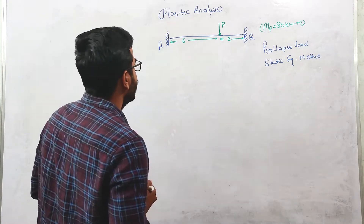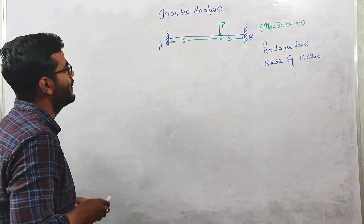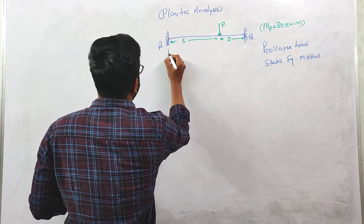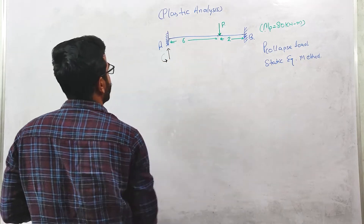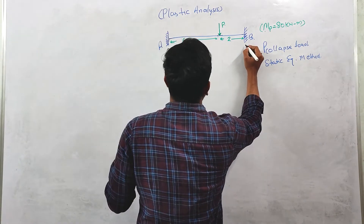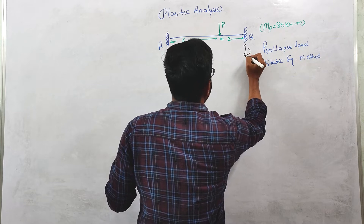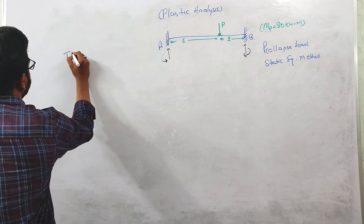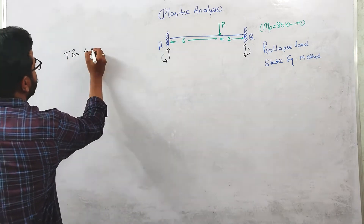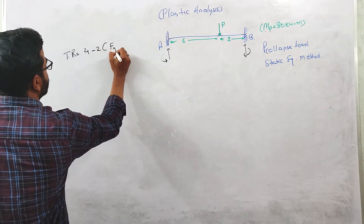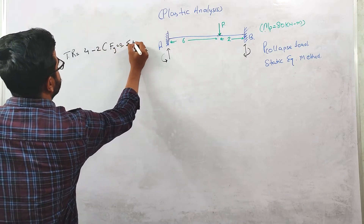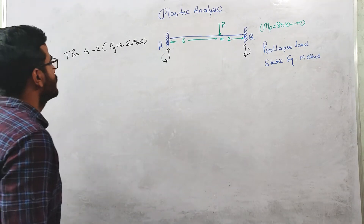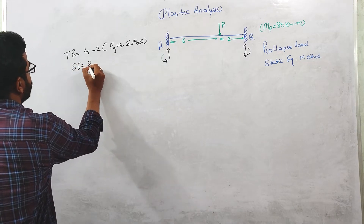This is basically a fixed beam. First, we need to identify the static indeterminacy of this beam. At support A there will be two reactions: one vertical and one moment. Similarly at B, there will be two reactions: one vertical and one moment. So total reactions are four. Equilibrium equations will be two: summation Fy = 0 and summation Mz = 0. We are neglecting the horizontal reaction. So static indeterminacy of this beam is two.